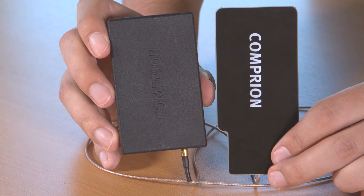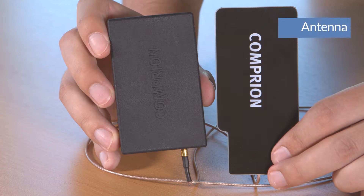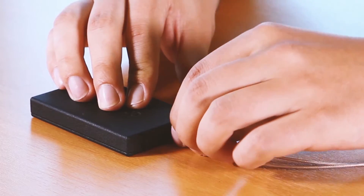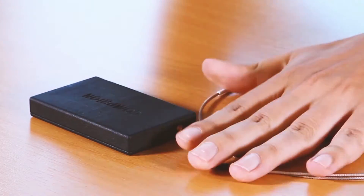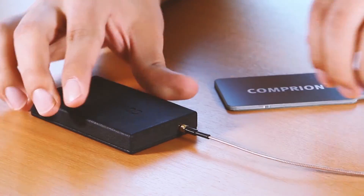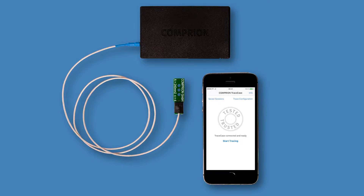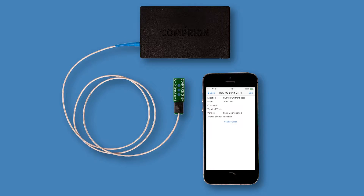Let's start with the generic trace case. Obviously an NFC trace tool needs an antenna. For our generic trace case we offer a range of different antenna designs. Connecting and changing the antenna is very simple. The trace case is controlled by an app, which should ideally be installed on the same smartphone that is used for the NFC communication.